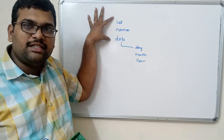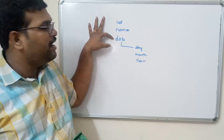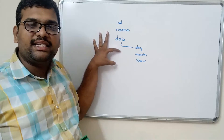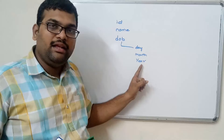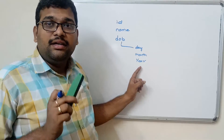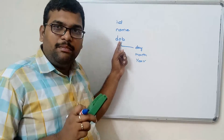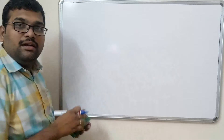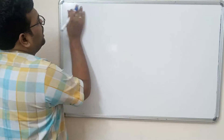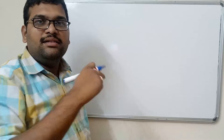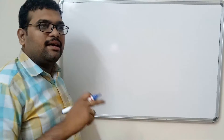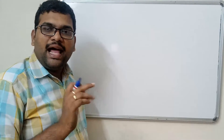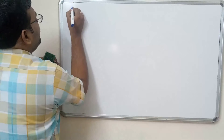First we have to create the student structure with members name, ID, and date of birth. Again, this date of birth is defined as a structure with the members day, month, and year. So we will create the date of birth structure variable as a member of the student structure. We need to define the date of birth structure first, and then the student structure.